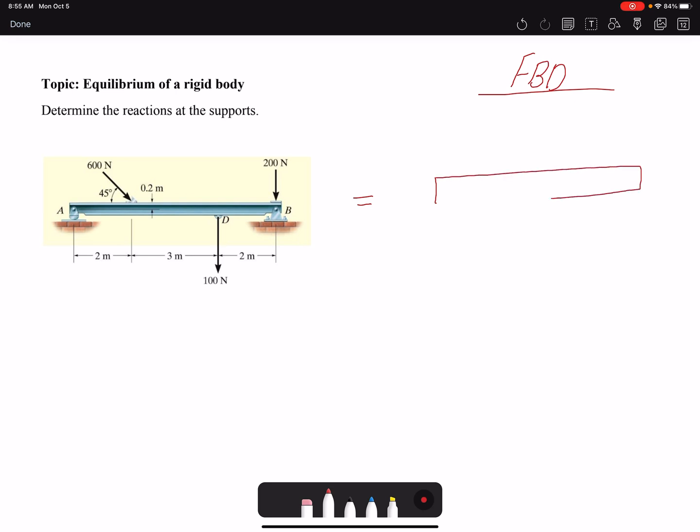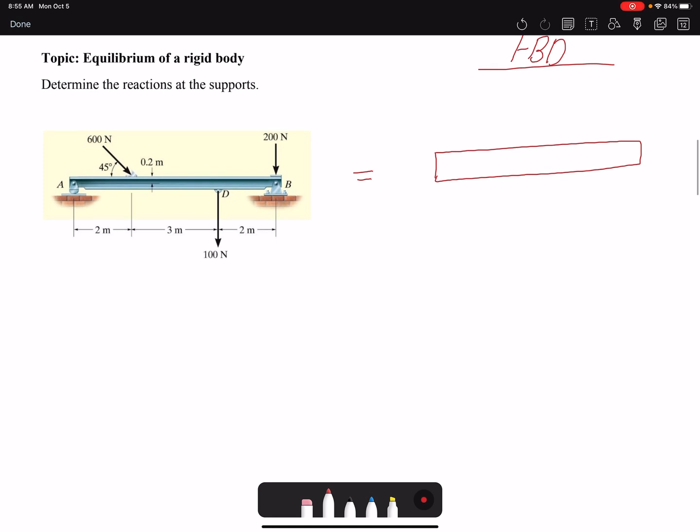I draw my beam, remove all the supports, and apply all the loads. Here we have 600 newtons, at point D we have 100 newtons, and at point B I have 200 newtons.